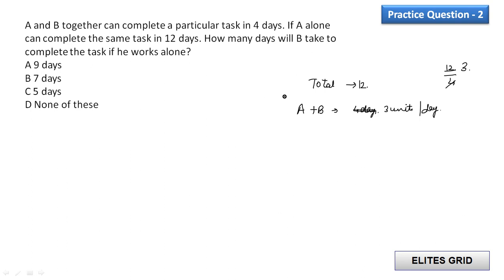Now if A alone can complete the same task in 12 days, then what can be said about A? That is A covers 1 unit per day. A covers 1 unit per day because we assumed that total number of units is equal to 12.